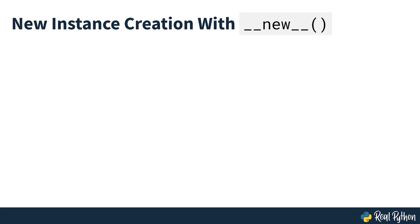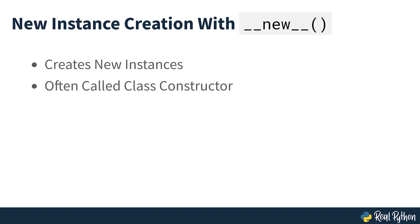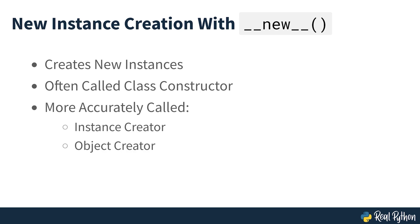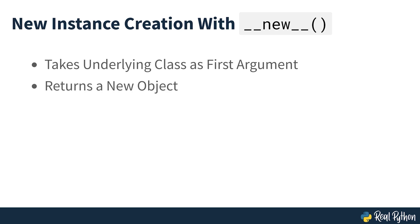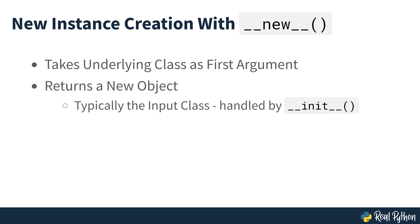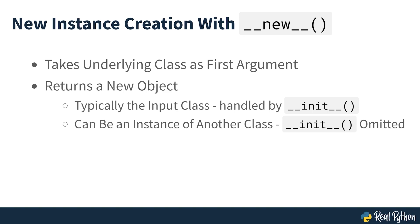Now that you understand the object initialization mechanism, you're ready to learn what Python does before it gets to this point in the instantiation process. It's time to dig into another special method called dunder new. This method takes care of creating new instances in Python and is often called a class constructor, though its job is actually to create new objects from the class blueprint — so you can more accurately call it an instance creator or object creator. Dunder new takes the underlying class as its first argument and returns a new object, typically an instance of the input class. In some cases, however, it can be an instance of a different class, and in that case it will not be passed to dunder init.